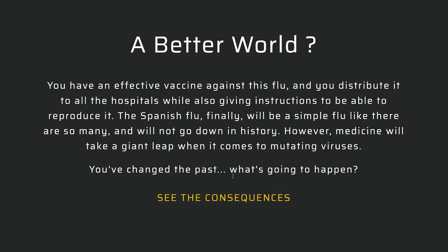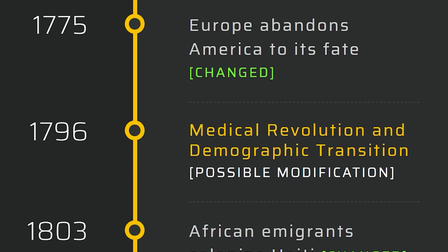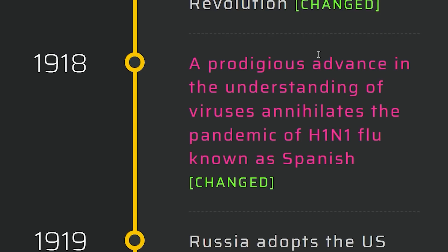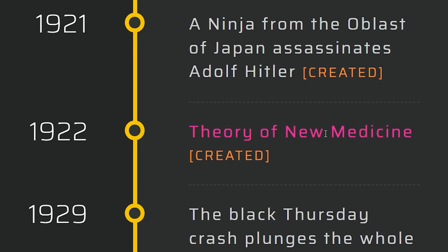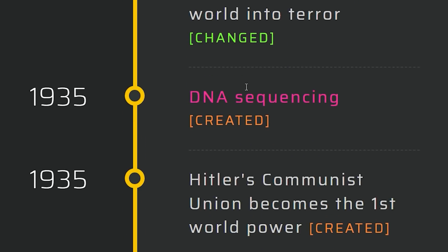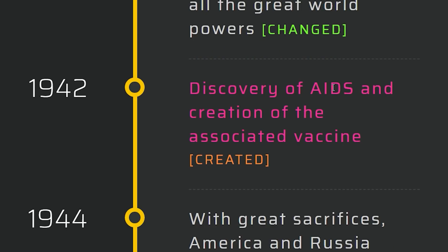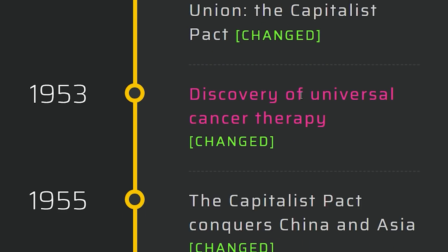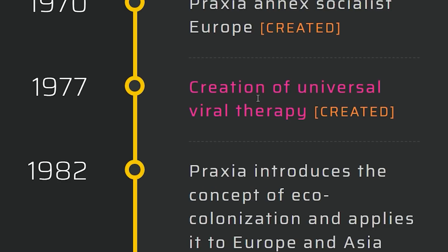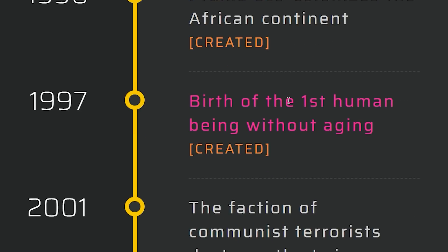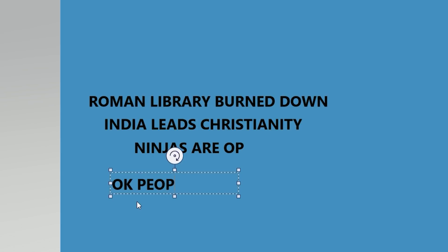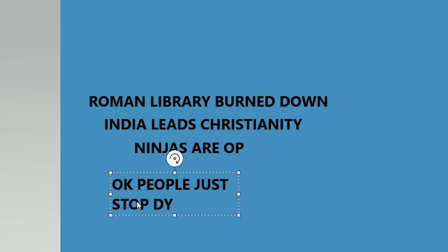Propose a vaccine immediately. Medical revolution and demographic transition in 1796. Advance the understanding of viruses — we've annihilated H1N1. Theory of new medicine in 1922. DNA sequencing in 1935. We're defeating some pretty bad things. Discovery of cancer therapy. Creation of universal viral therapy. Further, the first human without aging in 1997.